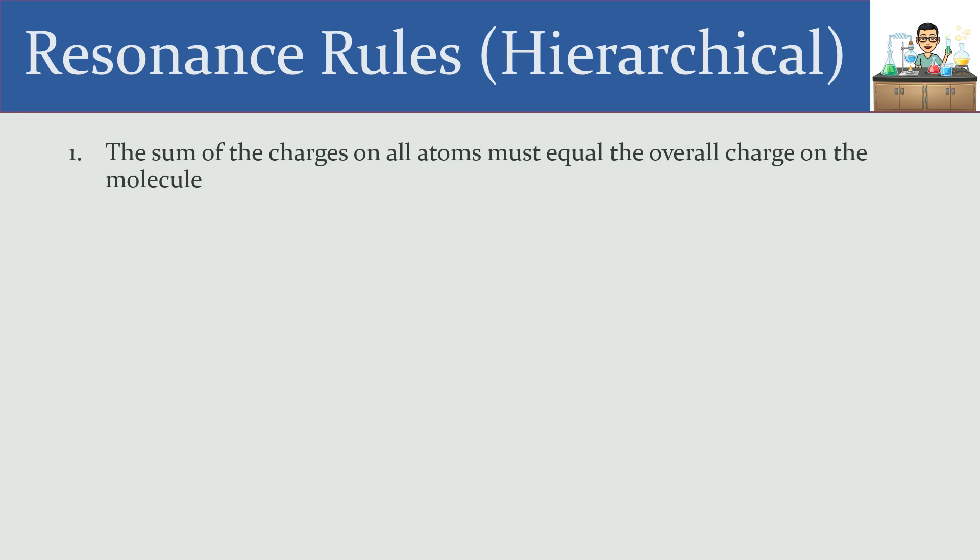The first and most important rule is that if you add up all the charges on all of your atoms, that must equal the overall charge on the molecule. There's no exception here. Especially when you have standardized exams that might have answer choices, taking a look at this first particular rule is a good efficient way to eliminate bad answer choices. The overall charge in your molecule has to equal the sum of the charges on the individual atoms.